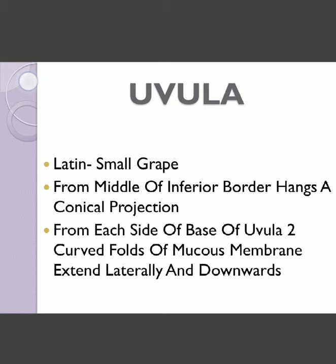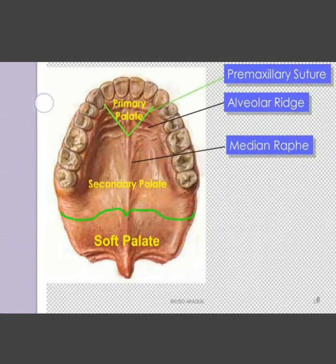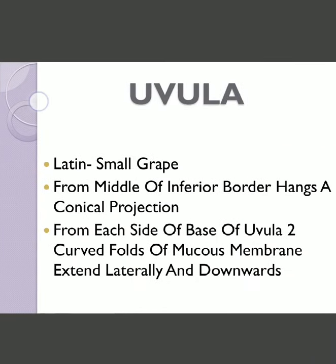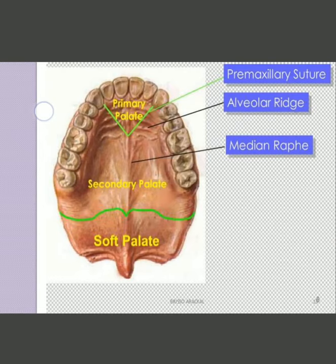The uvula hangs from the middle portion of the inferior border of the soft palate. It is a conical projection that appears like a small grape. From each side of the base of the uvula, two curved folds of mucous membrane extend laterally and downwards.